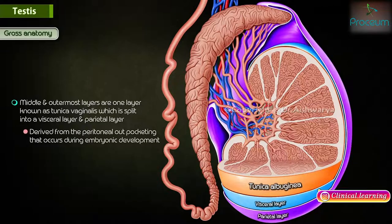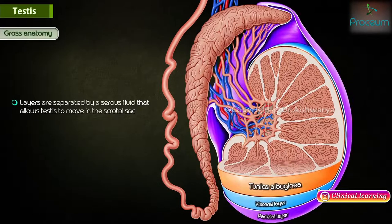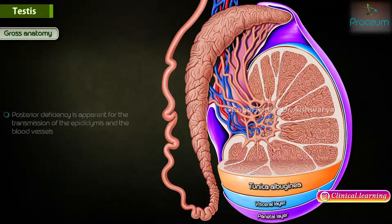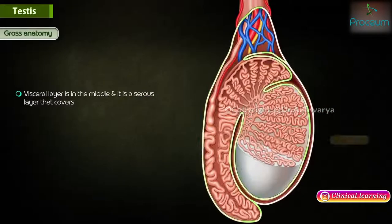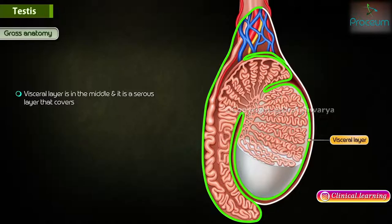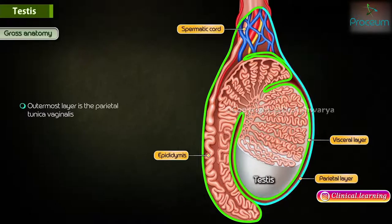They are derived from the peritoneal outpocketing that occurs during embryonic development. The layers are separated by serous fluid that allows the testis to move in the scrotal sac. A posterior deficiency is apparent for the transmission of the epididymis and blood vessels. The visceral layer is in the middle and is a serous layer that covers the testis, epididymis, and the distal part of the spermatic cord. The outermost layer is the parietal tunica vaginalis.